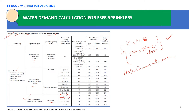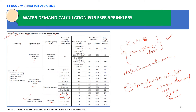A minimum of 12 sprinklers is required to calculate the water demand requirements when considering ESFR sprinklers — this is mandatory as per Chapter 23 of NFPA 13, 2019 edition. From this table, the hose stream allowance is 250 GPM, and the water supply duration is 60 minutes.